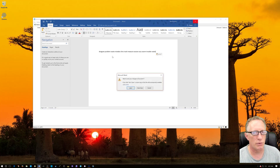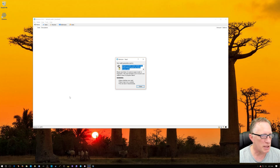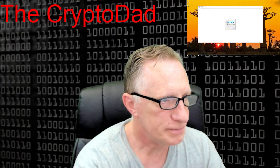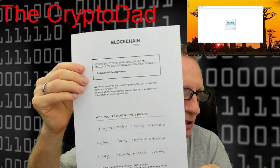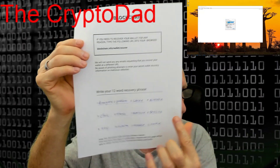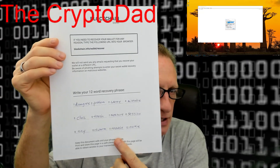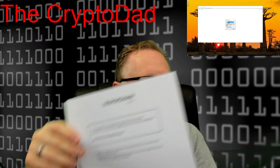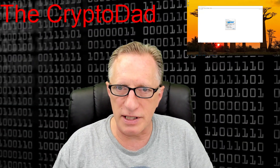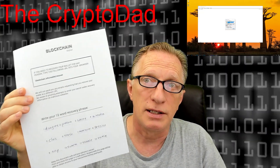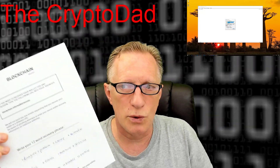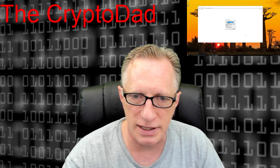A much better way is to write down your seed on a piece of paper. I have this nice piece of paper which I generated from the blockchain website — very nice, neat, and clean — and I've written down the entire seed for this wallet on it. This piece of paper should be kept in a very safe place, since it's basically all of the Bitcoins in your wallet — just like money. Put it somewhere safe that you'll remember.